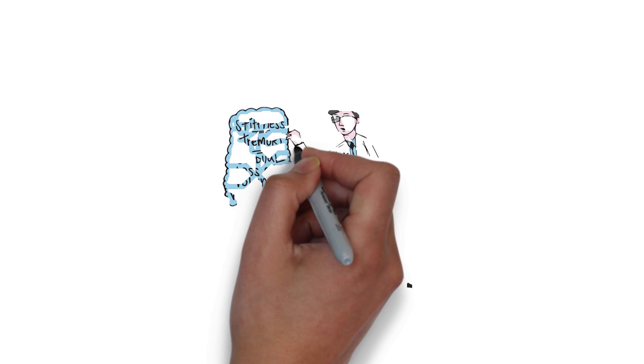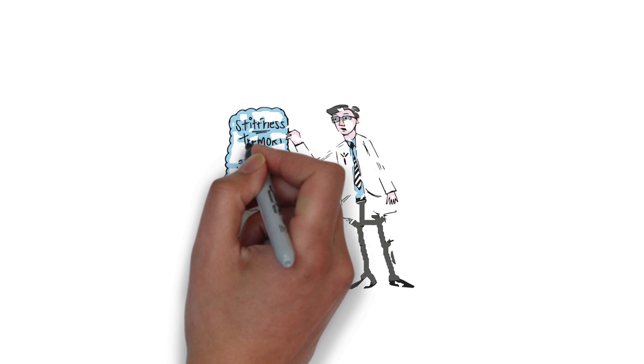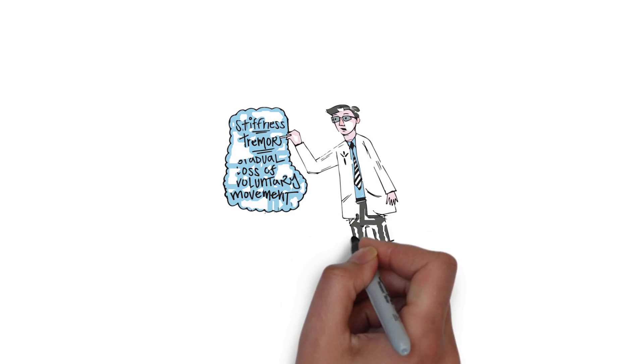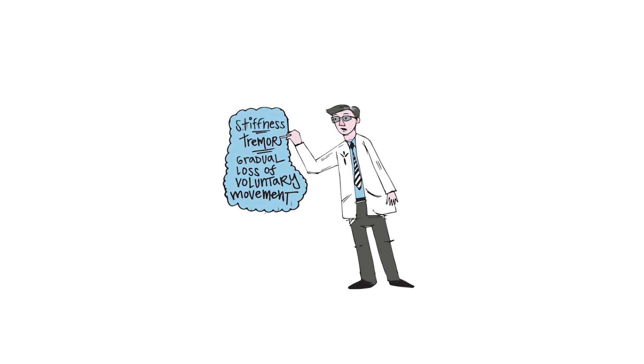When most people think of Parkinson's, they think of its movement-related or motor symptoms, which includes stiffness, tremor, and a gradual loss of voluntary movement.